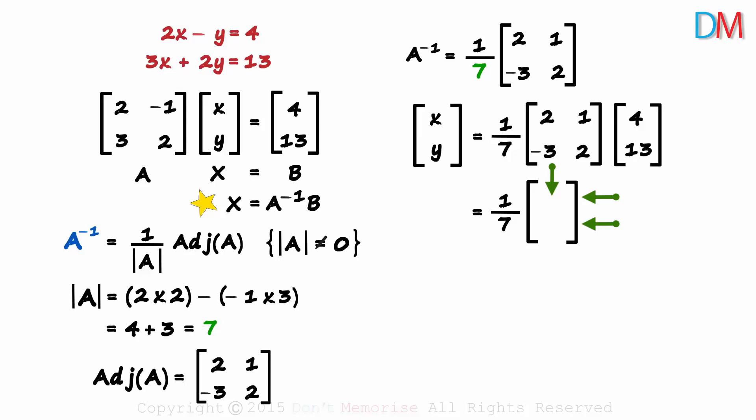Two rows and one column. The element in this position will equal 2 times 4 plus 1 times 13. That will equal 8 plus 13 or 21. What about the element in this position? It will be negative 3 times 4 plus 2 times 13. Negative 12 plus 26 will equal 14.